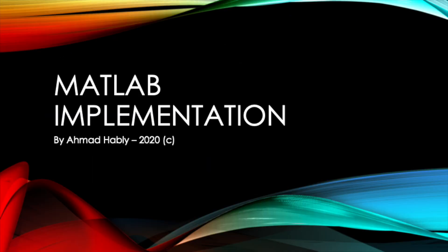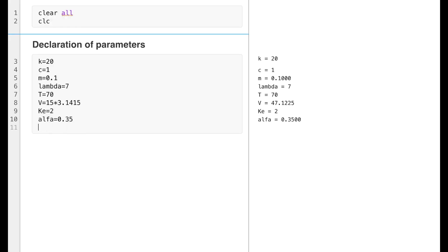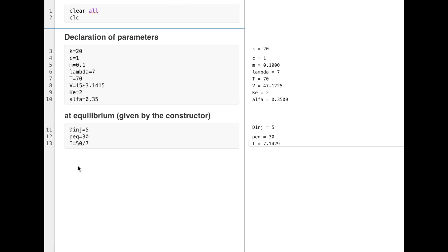So if we want to implement this using MATLAB, here I will first put the values of the parameters. And at equilibrium, given by the constructor, we know that the pressure at equilibrium is equal to 30 and we can find I at equilibrium.